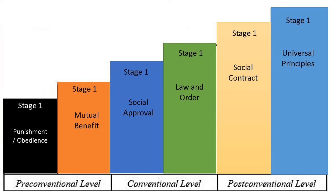This is the paradigm of the theory of moral development. It has three levels: pre-conventional, conventional, and post-conventional. Each level has two stages. In the pre-conventional level, stage 1 is punishment or obedience and stage 2 is mutual benefit. In the conventional level, stage 3 is social approval and stage 4 is law and order.